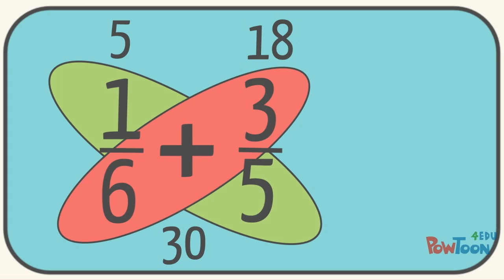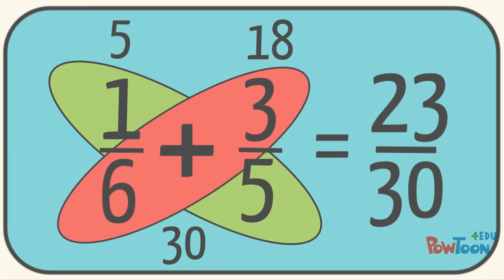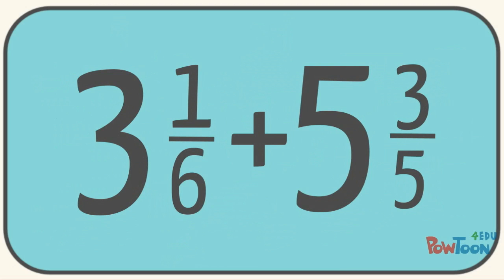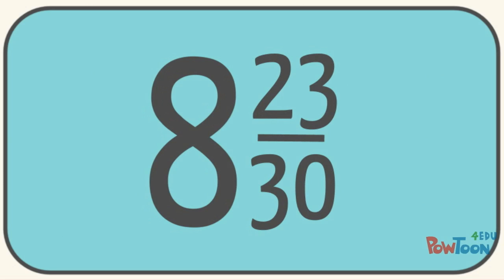Now that we have it set up, all we have to do is add 5 plus 18 to give us our answer of 23. That is our new numerator. Then we just drag over 30 into the denominator so we get 23 thirtieths. This means that our original problem of 3 and 1 sixth plus 5 and 3 fifths equals 8 and 23 thirtieths.